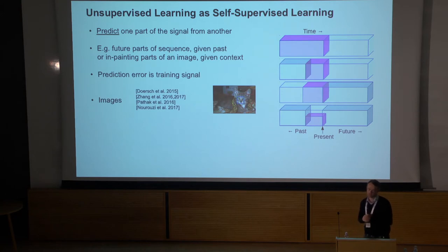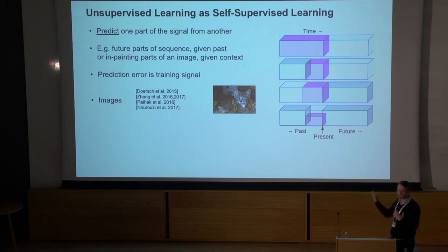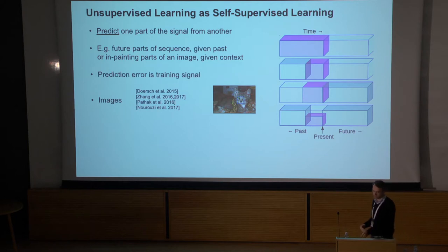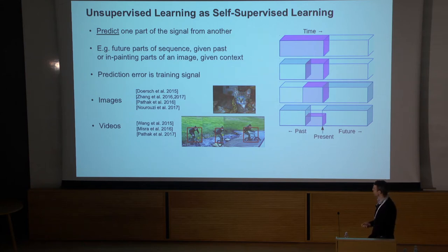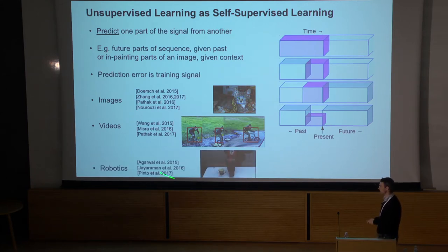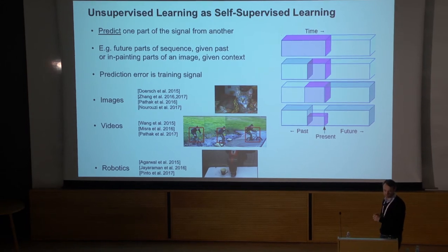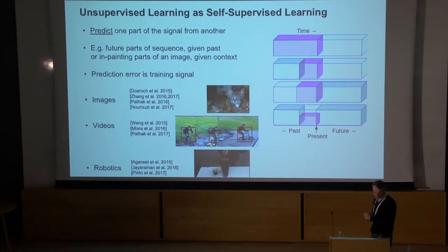There's been a whole sequence of papers looking at different ways of doing this. Some folks have posed it as a classification problem — for example, trying to predict the relative location of a pair of patches in an image. People have also done this for video, perhaps tracking patches, and also looked at robotics applications like grasping actions.